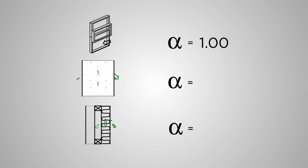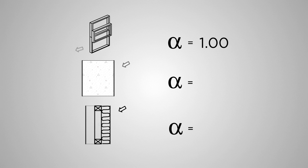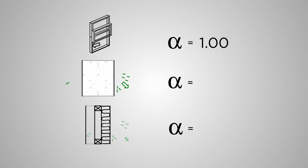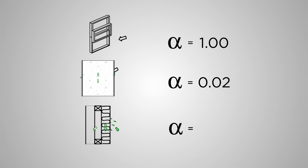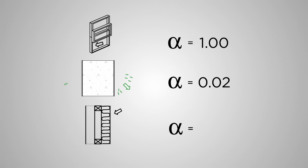A value of 0 means 100% of the sound is reflected. Reaching a point where absolutely nothing is either absorbed or transmitted is impossible, but we come close with smooth concrete. The absorption coefficient of smooth concrete is 0.02 — meaning 2% of the sound energy is transmitted or absorbed, and 98% of the sound energy is reflected.